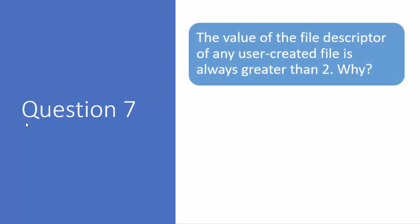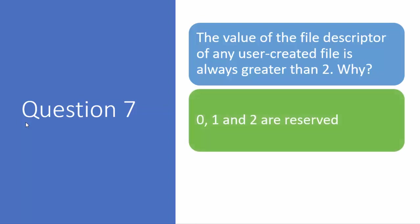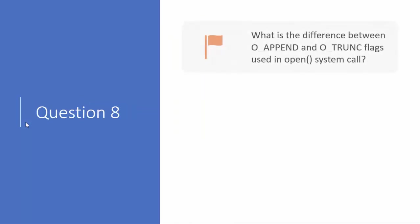Question number seven: the file descriptor of any user-created file is always greater than two — why is it not zero, one, or two? The reason is that zero, one, and two are reserved: zero is for the standard input device, one is for the standard output device, and two is for the standard error device.